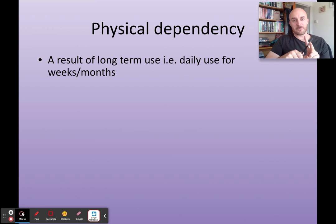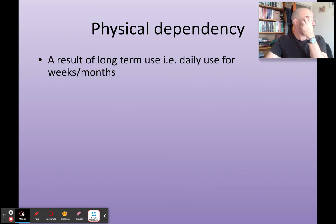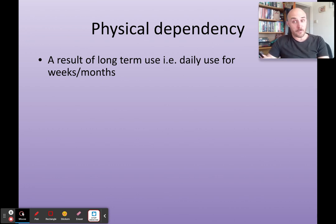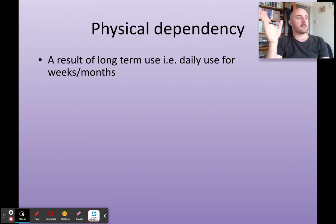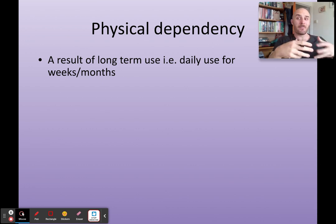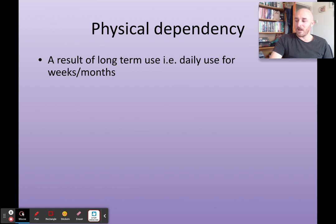Physical dependency is when your body literally depends on the substance for survival. It is a result of long-term use. For example, one student's mum had used nasal decongestion spray so much that the doctor told her that her cells had literally become dependent on receiving that substance. You can theoretically get addicted to any substance — even tea. Through daily use over weeks and months, your body comes to depend on it.